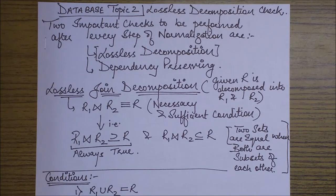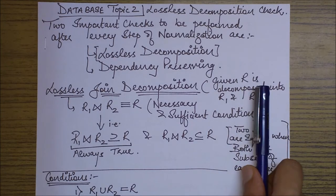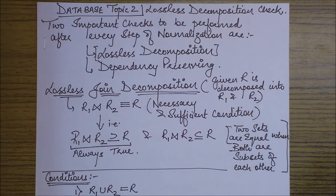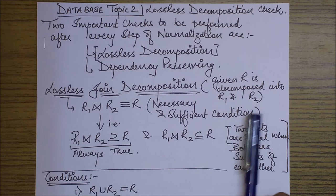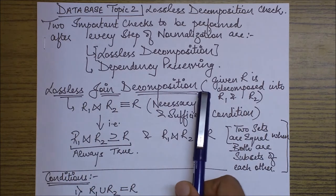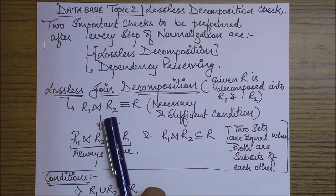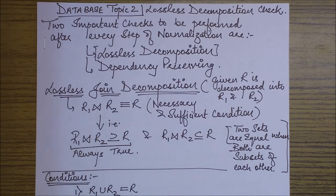First of all, we will see what is a lossless joint decomposition. So given a relational schema R, or given a relation R, and given that it is decomposed into two sub-relations R1 and R2, we say that it is a lossless joint decomposition if join of R1 and R2 results exactly in the new relation which is same as R.